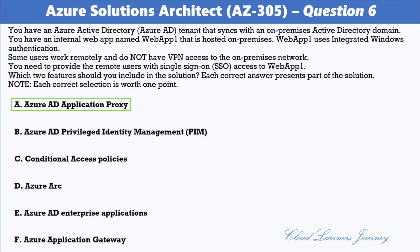The correct options are A) Azure AD Application Proxy and E) Azure AD Enterprise Applications. Application Proxy is a feature of Azure AD that enables users to access on-premises web applications from a remote client. It includes both the Application Proxy service which runs in the cloud, and the Application Proxy connector which runs on an on-premises server. You can configure single sign-on to an Application Proxy application.